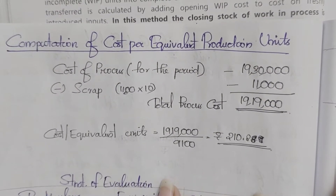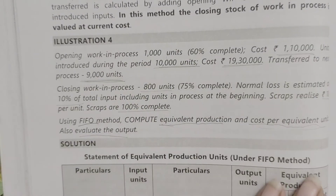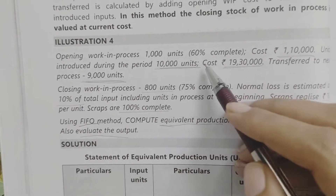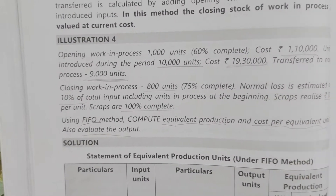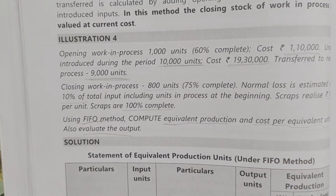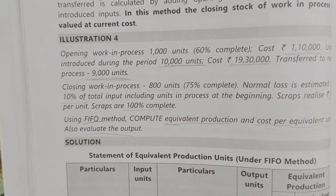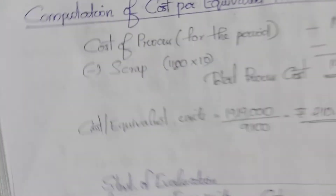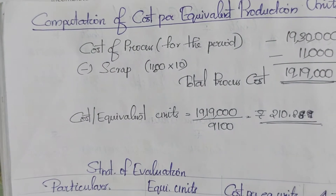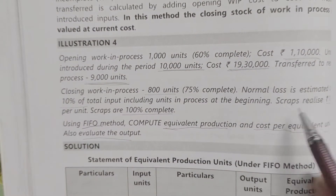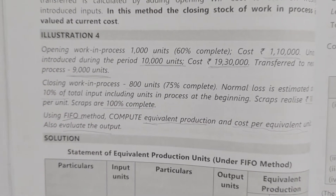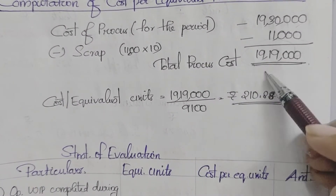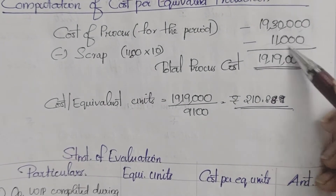Total equivalent units = 9,100. In the weighted average method, opening WIP is included at 100%. But in the FIFO method, since scrap realizes 10 rupees per unit, 1,100 units × 10 = 11,000 scrap realization. Total process cost = 19,90,000.